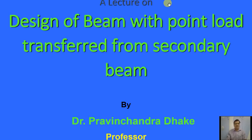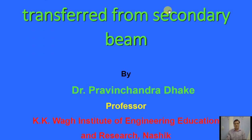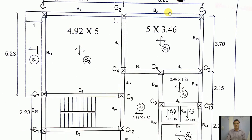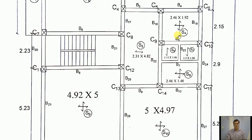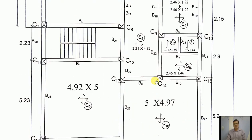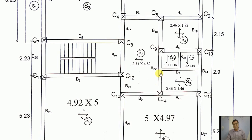Hello students. Today we will discuss the design of a beam with point load transfer from a secondary beam. This is the plan of a G+2 structure, specifically the first floor plan. We are going to design beam B7, which is a secondary beam. Beam B23 also transfers a point load on B7, and B7 in turn transfers load on beams B22 and B24. First we will design B7, then transfer the load onto B22, and design the continuous beam B18 and B22 by the moment distribution method.